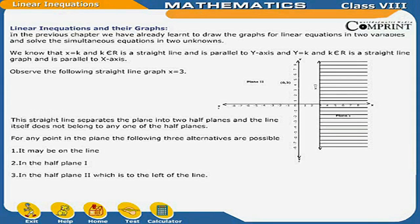Observe the following straight line graph for x = 3. In the graph, this straight line separates the plane into two half planes, and the line itself does not belong to any one of the half planes. For any point in the plane, three alternatives are possible: it may be on the line, in half plane 1, or in half plane 2.